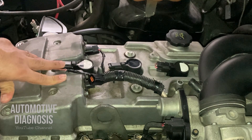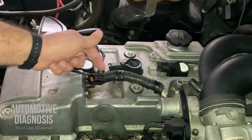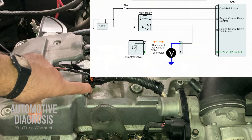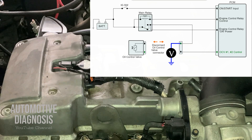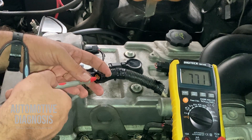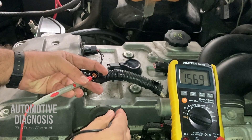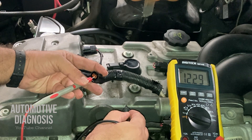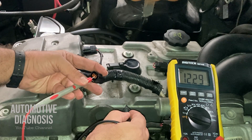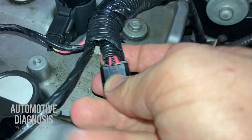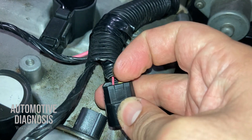When the engine is running, anytime the ECM wants to control the solenoid valve, it provides the ground from the other wire. The first thing you need to do is check the power supply on the VVT solenoid valve to make sure battery voltage is provided. Use the multimeter set on voltage — red probe on the positive pin and black on body ground. As you see, I'm getting battery voltage. If you are not getting anything, it means the power supply line is shorted to ground or open, so you need to trace the wiring back.